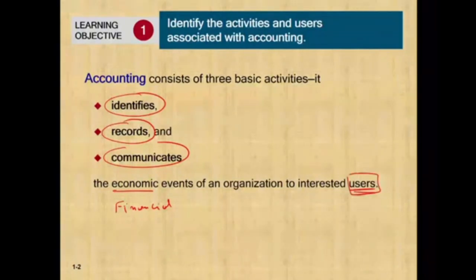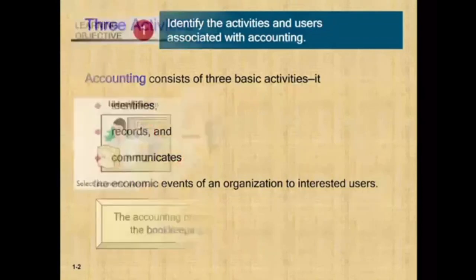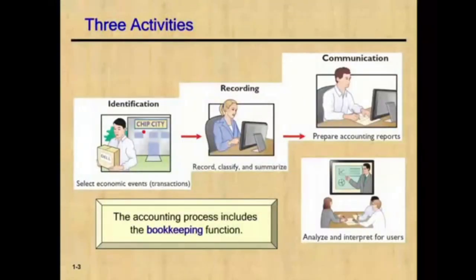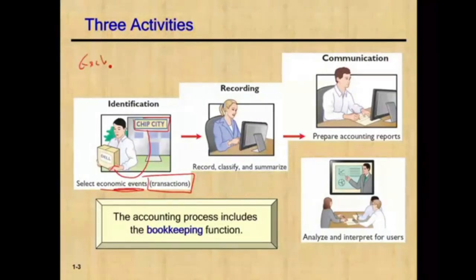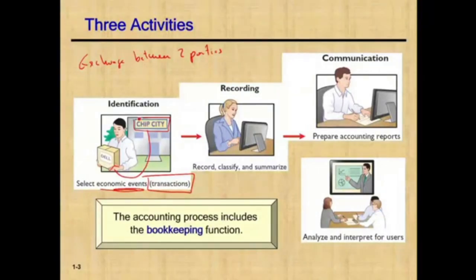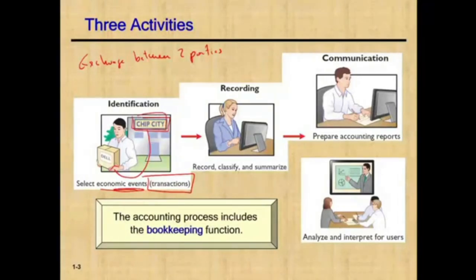Let's see what these three basic activities entail with an example. Let's assume this company, Chip City, purchases a computer from Dell. Is this an economic event or a financial transaction? The answer is yes. A transaction is an exchange between two parties — sometimes internal within the company itself, sometimes external. Chip City bought a computer from Dell, so that's an external transaction.